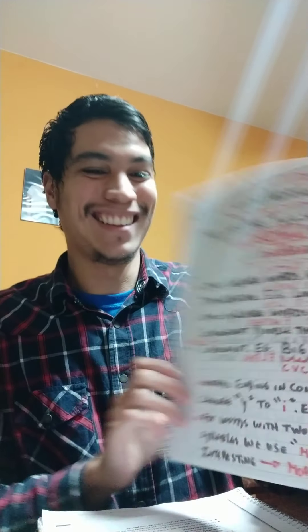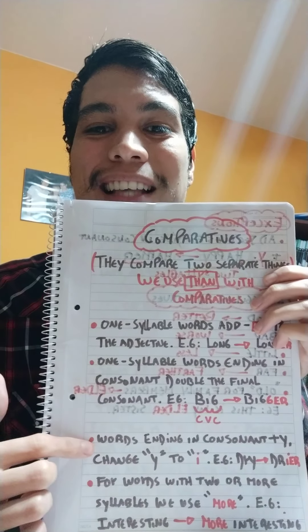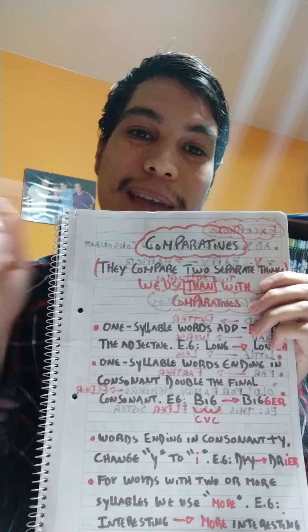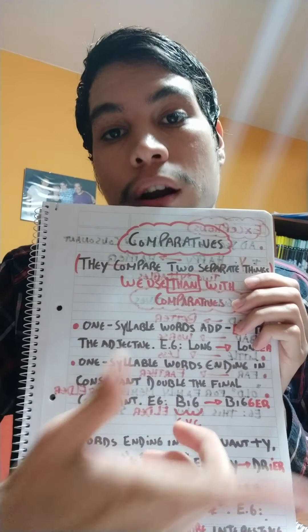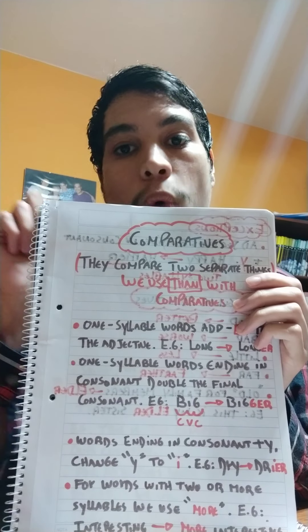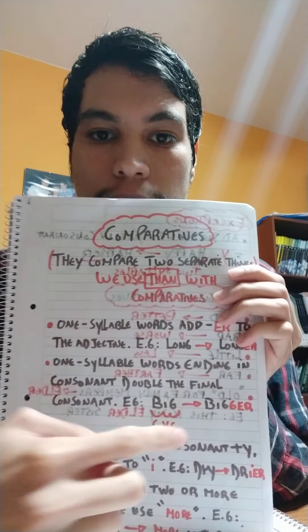Words ending in consonant plus Y: change Y to I. Las palabras que terminan en Y, cambias la Y por la I latina. For example, dry → drier. You change the Y to I and add ER: drier.